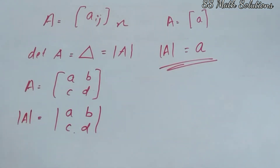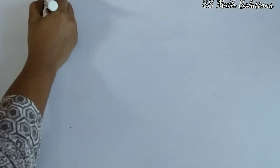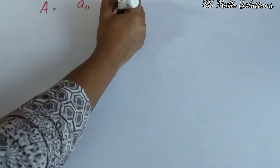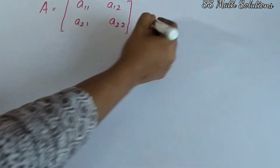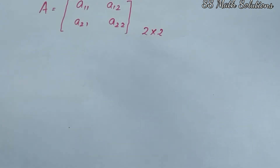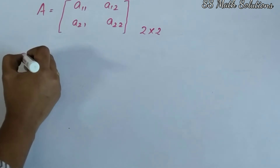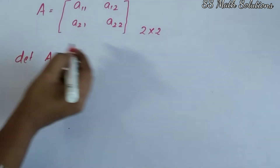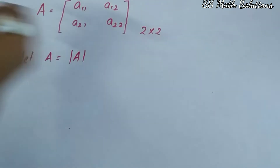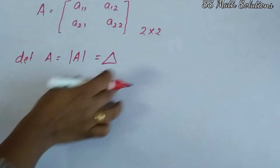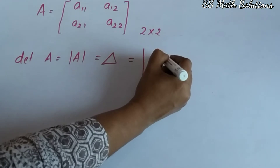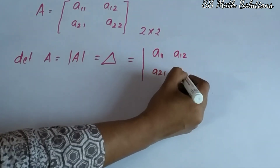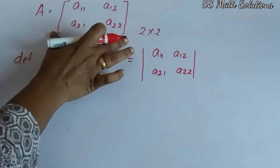Now we are going to check the determinant of a matrix of order 2. I will write one example: A equal to [A11, A12; A21, A22]. This is a matrix of order 2 by 2, a square matrix. So the determinant of A can be written as det(A), or |A|, or determinant of A — all three representations are the same. This is equal to the determinant of [A11, A12; A21, A22].